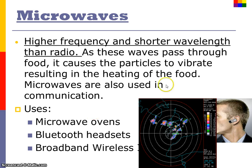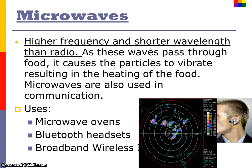Microwaves, as used in microwave ovens, work by having these high frequency waves pass through food, causing the particles — specifically the water particles in the food — to vibrate. That vibration is what cooks the food. Bluetooth headsets use microwave transmissions, which means they're on a different, slightly higher frequency than radio and television signals, which is why they do not interrupt each other.